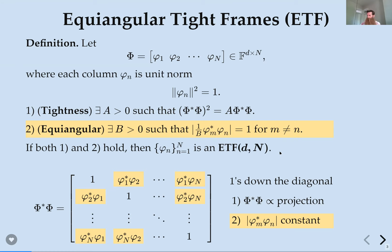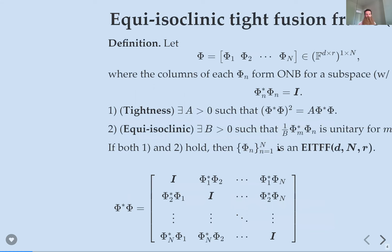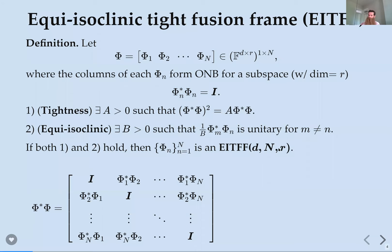More recently we've become interested in higher-dimensional versions. When we have lots of principal angles, what's the appropriate generalization that answers the question: how do we maximize the minimum principal angle? The answer is what we call an equi-isoclinic tight fusion frame. That is a collection of sub-matrices, each D×R — so each is an isometry spanning an R-dimensional subspace — stacked next to each other, N of them total.